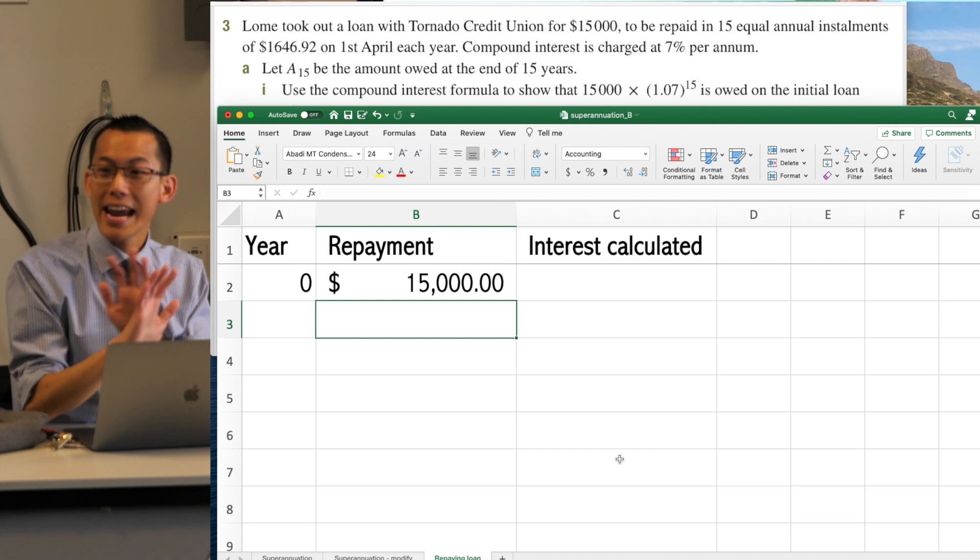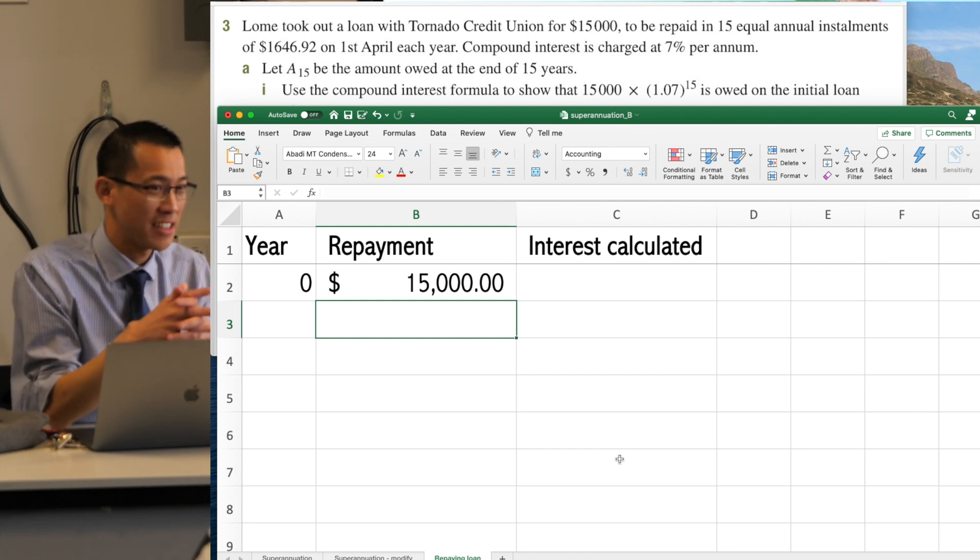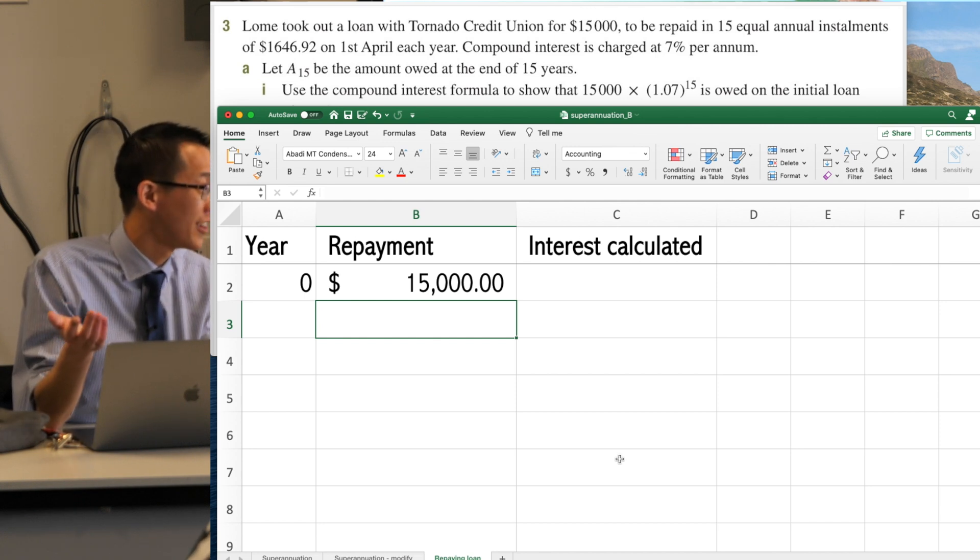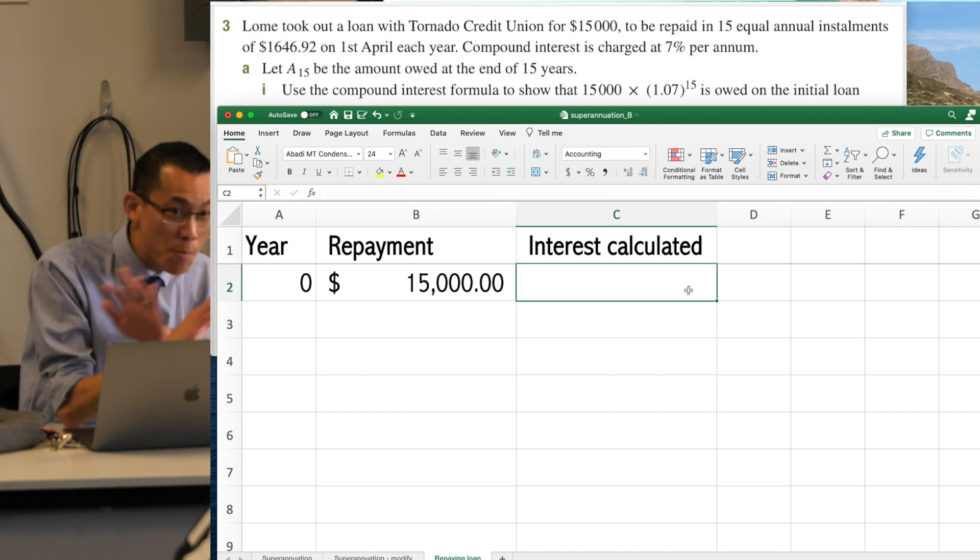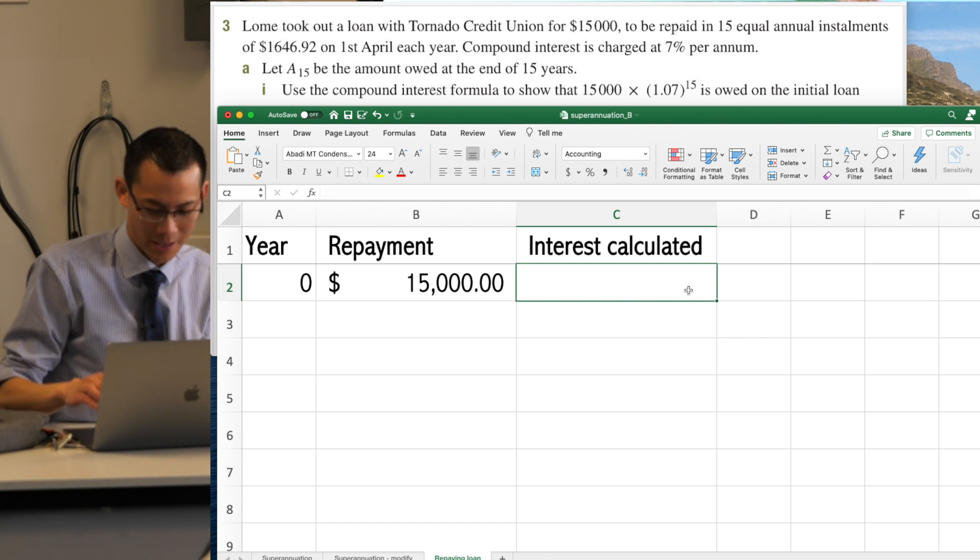So guess what they do? Before you've made any repayments, they already charge you interest, okay? You're like, what? What jerks? I'll just pay earlier, right? Well, they'll just charge you earlier as well. So therefore, you can see, year zero, no payment has happened, but they're going to charge you interest because the bank always wins, okay?